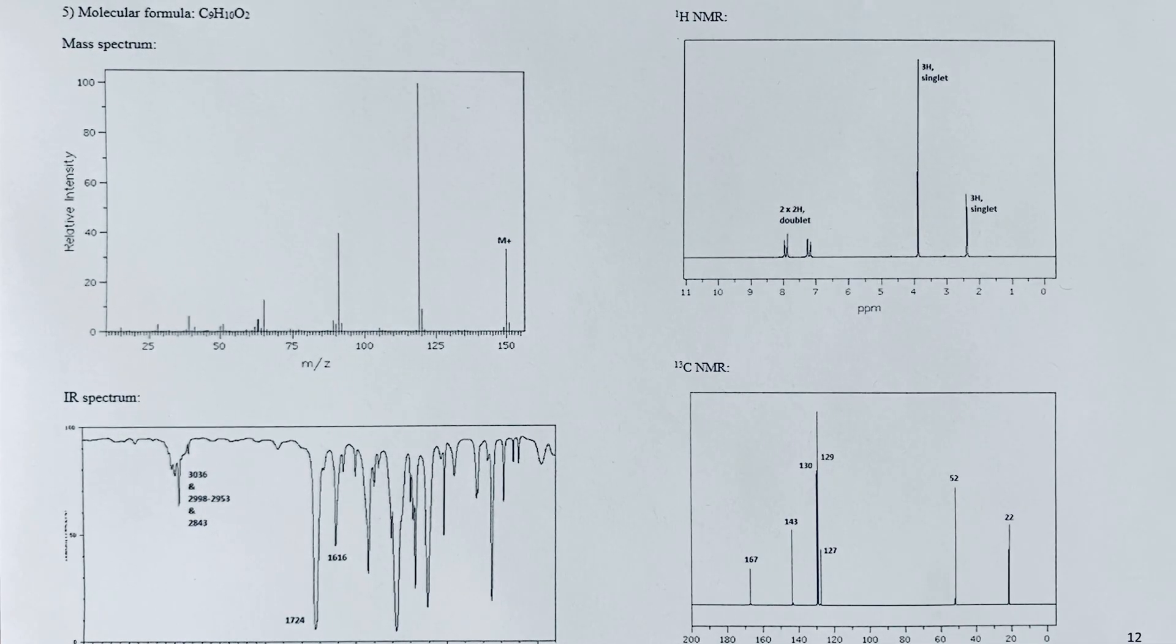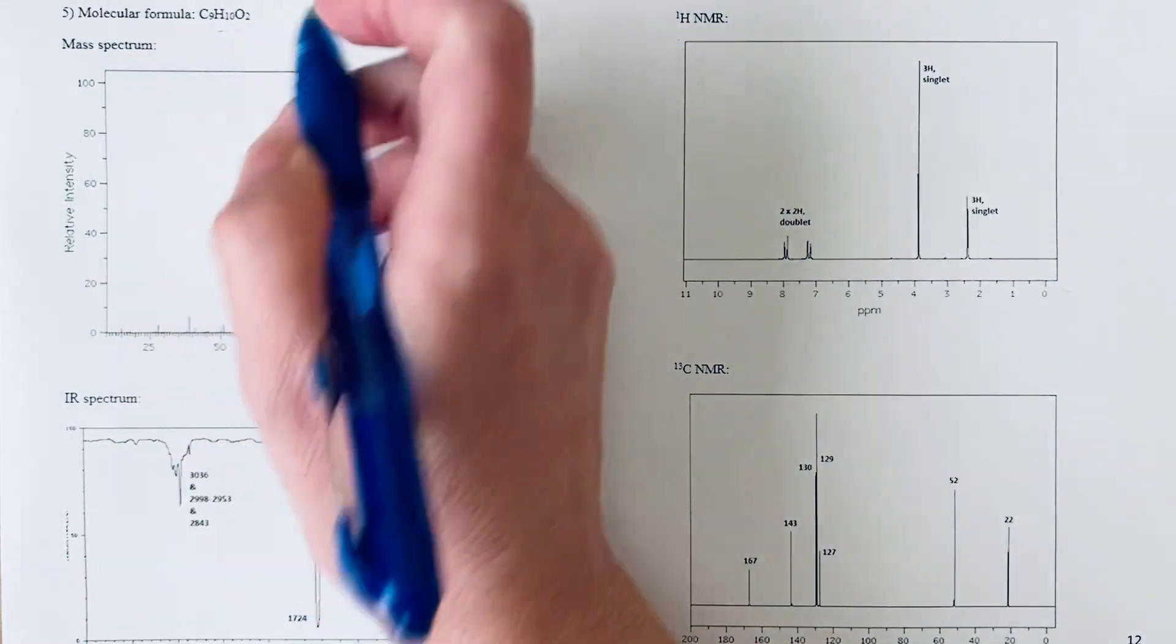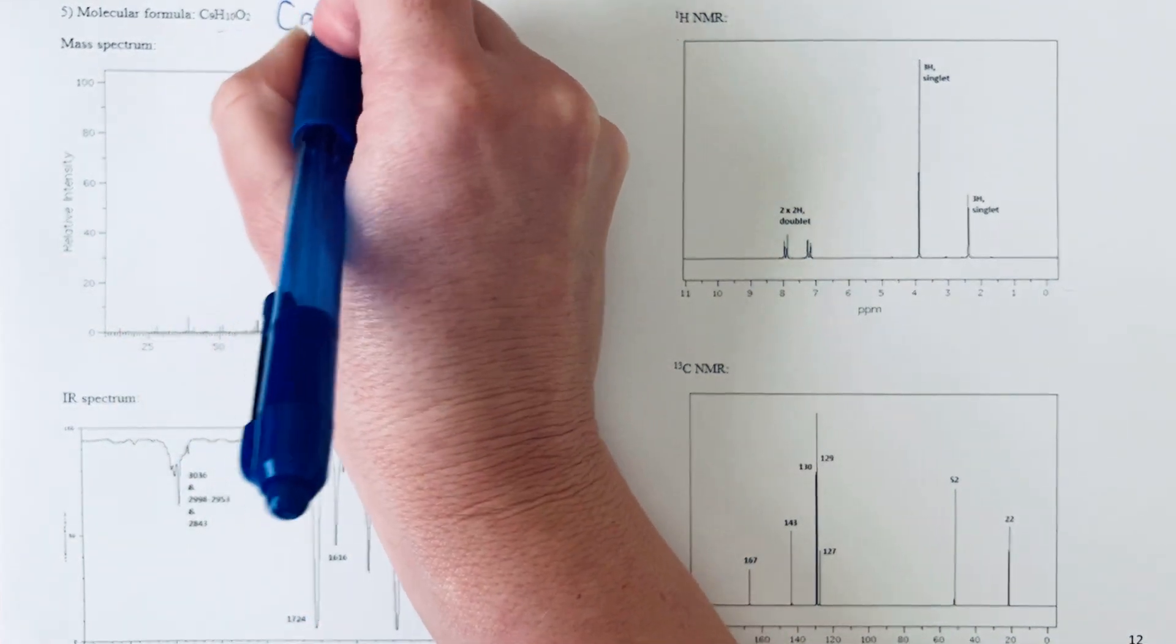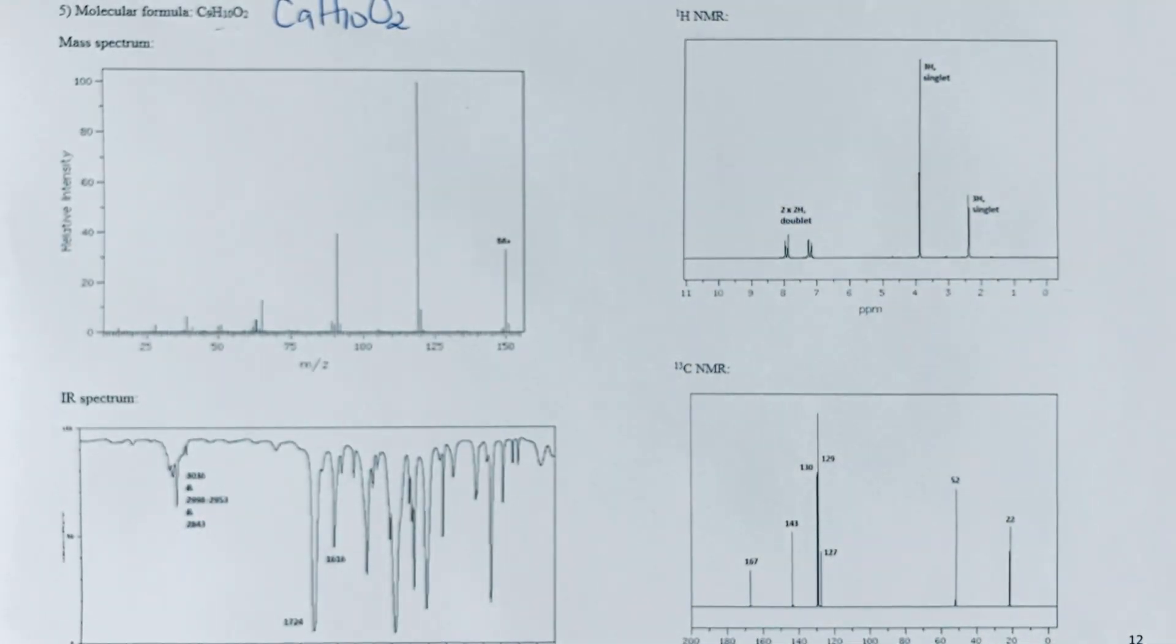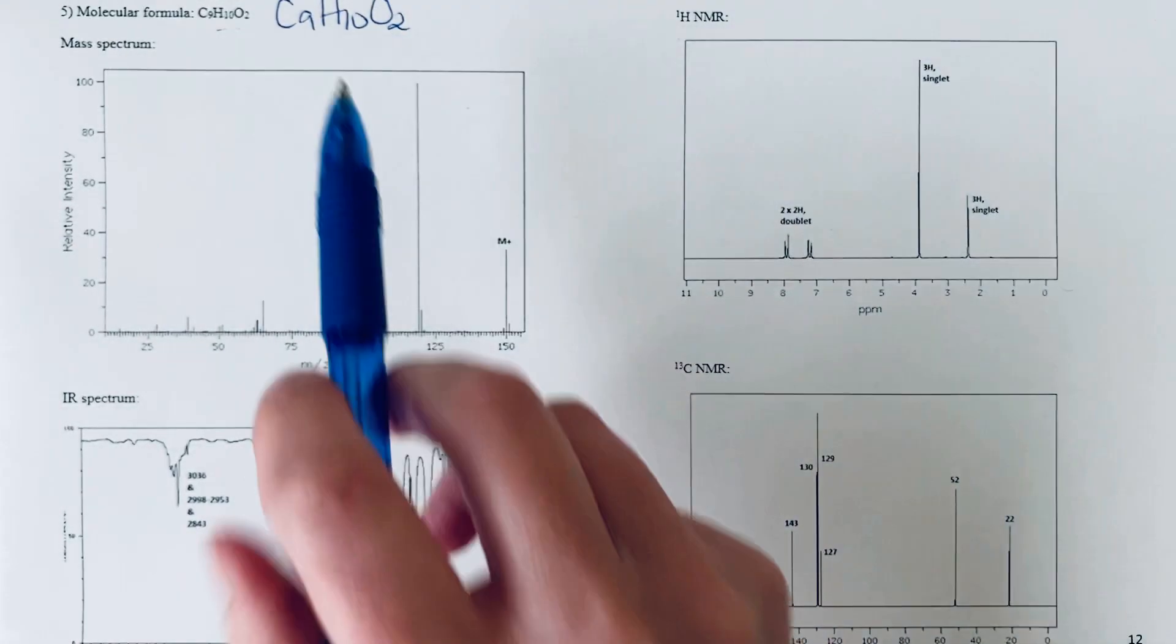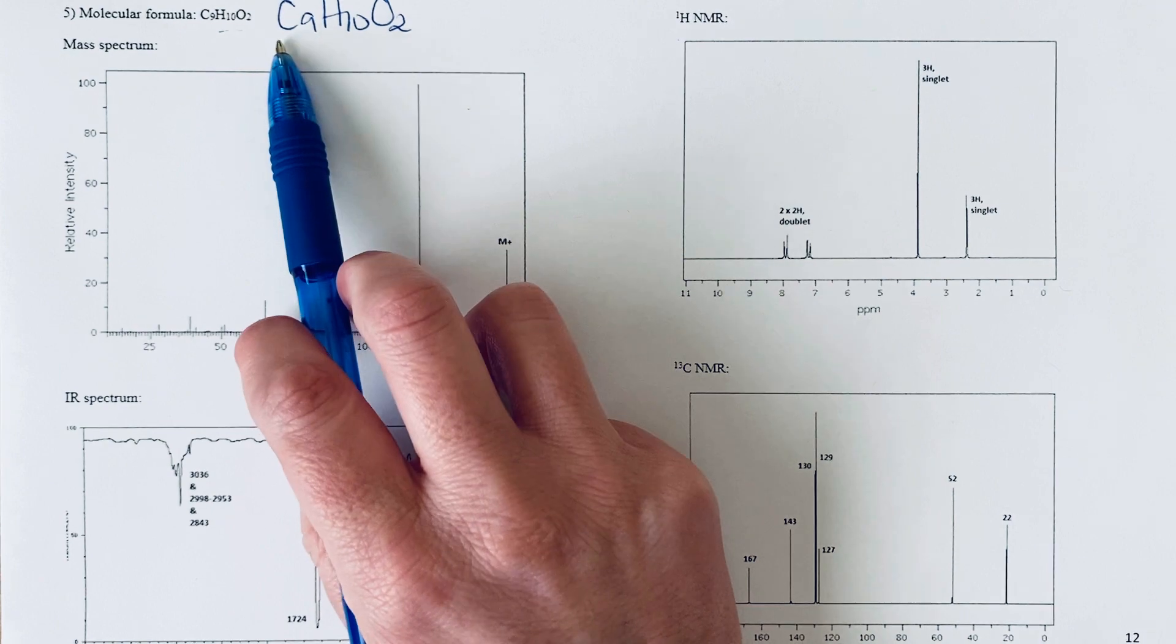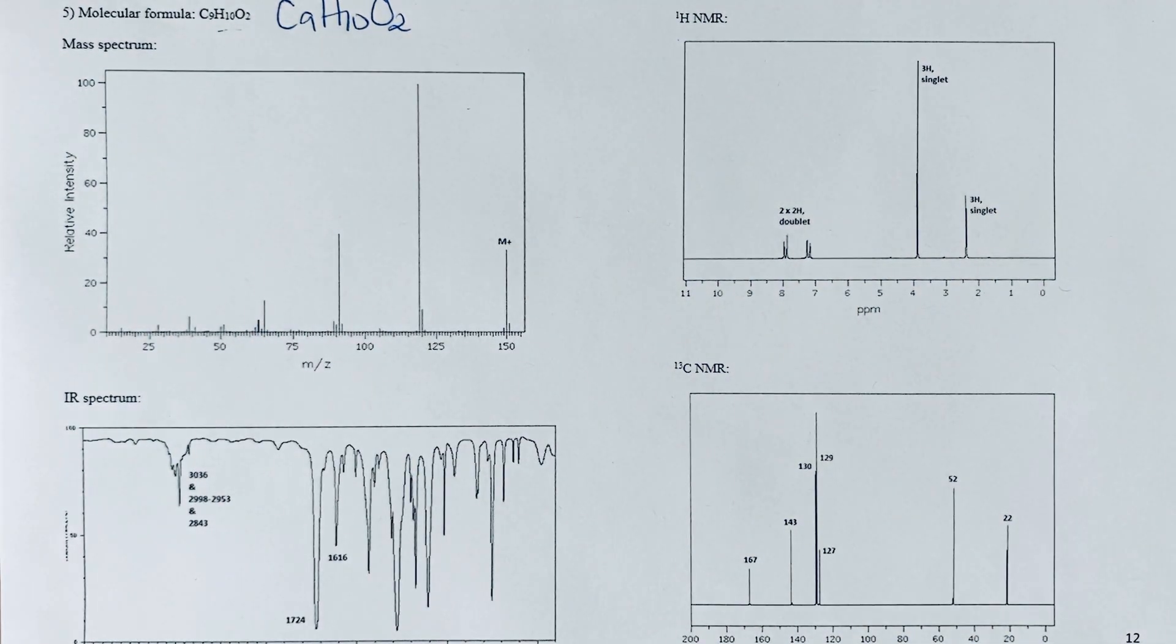We have another example of a combined spectroscopy problem to identify the structure of an unknown organic compound. We have a molecular formula C9H10O2, so we've got a lot of unsaturation in this molecule. Notice relative to the number of carbons we have, we don't have very many hydrogens.